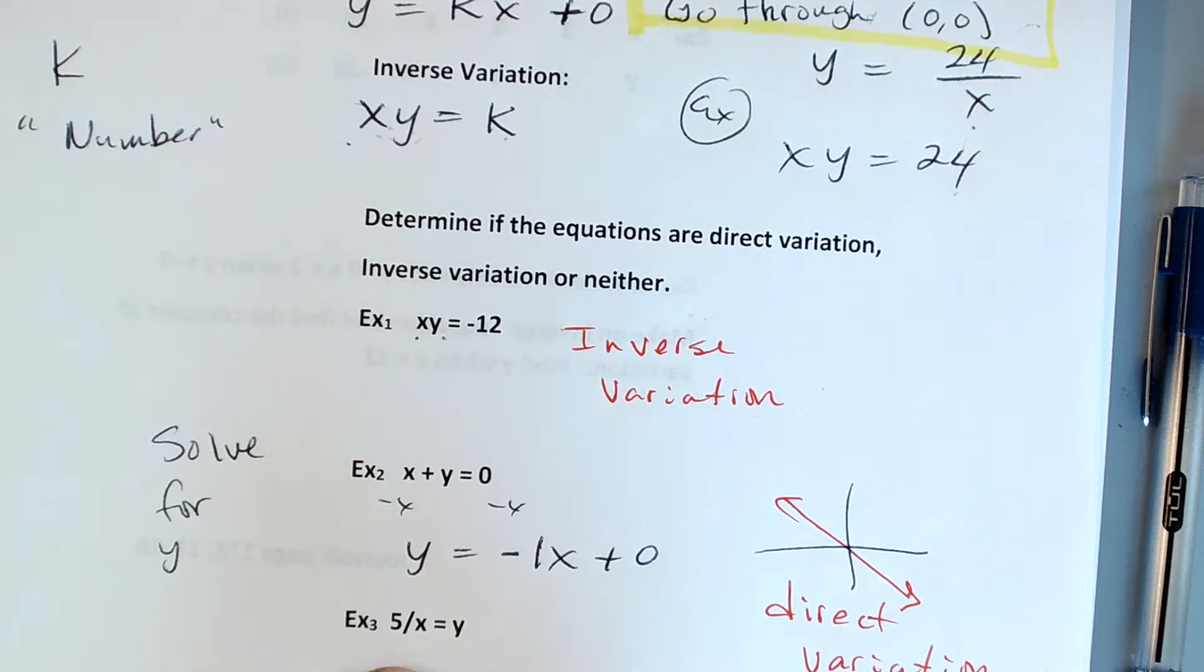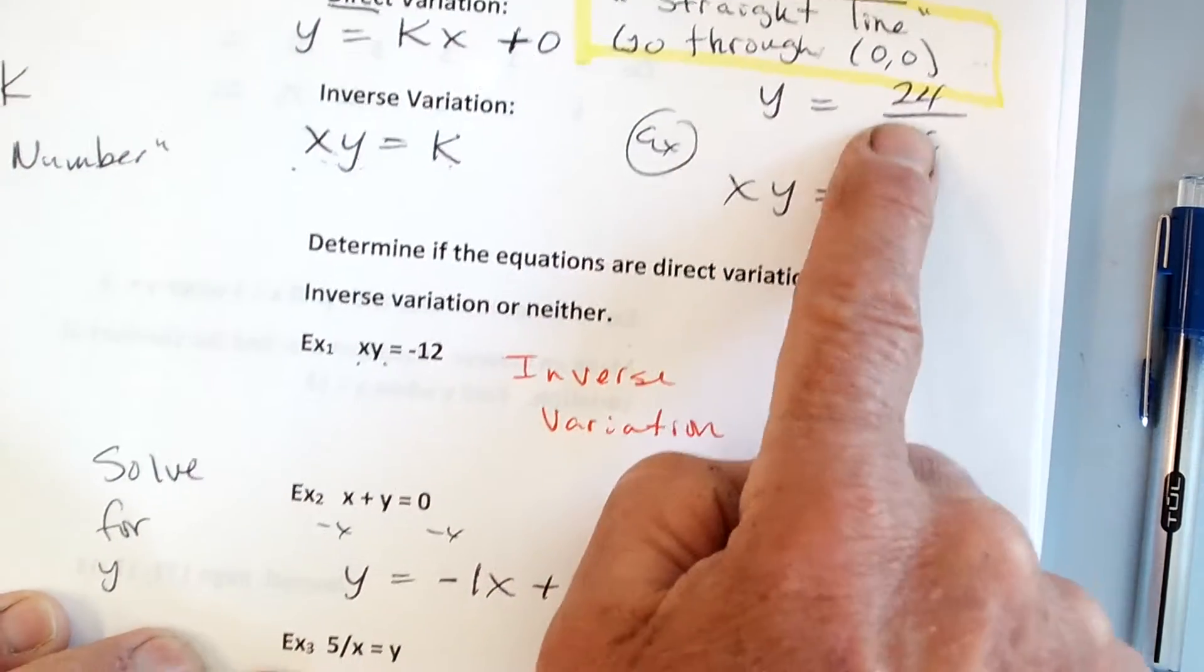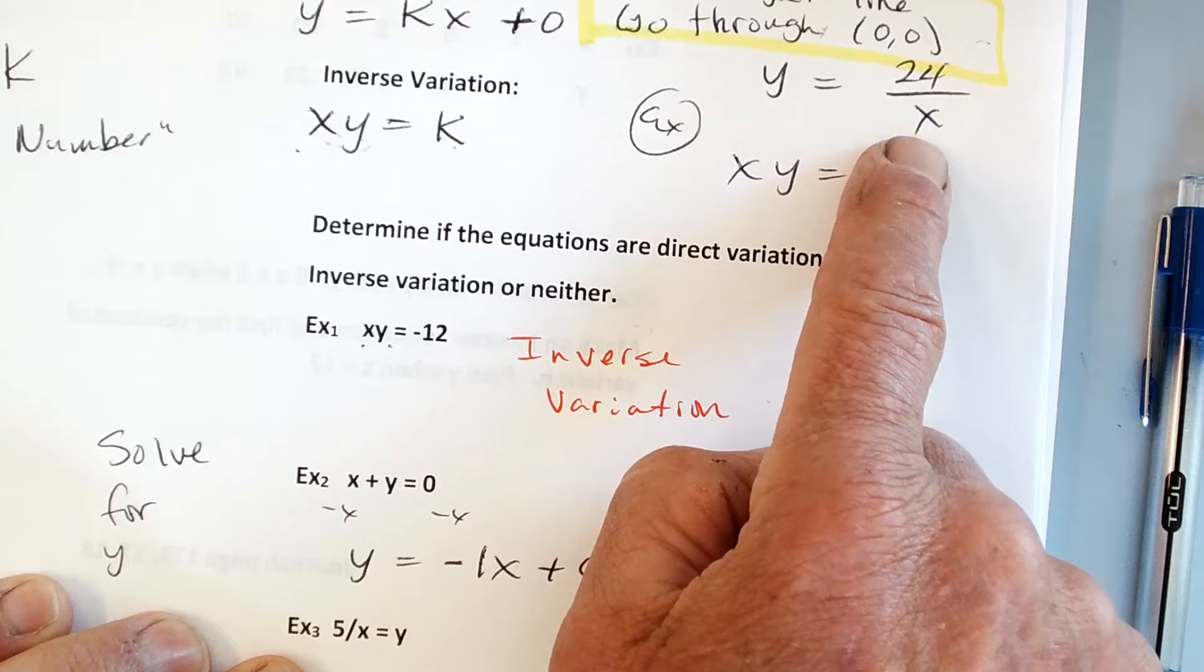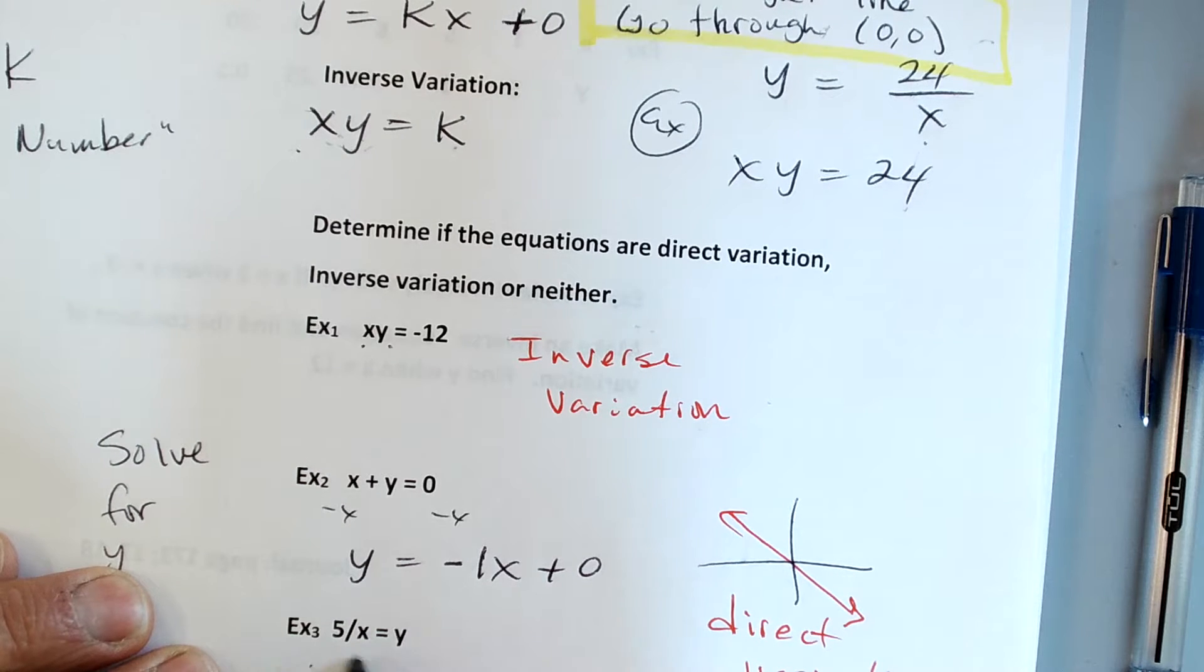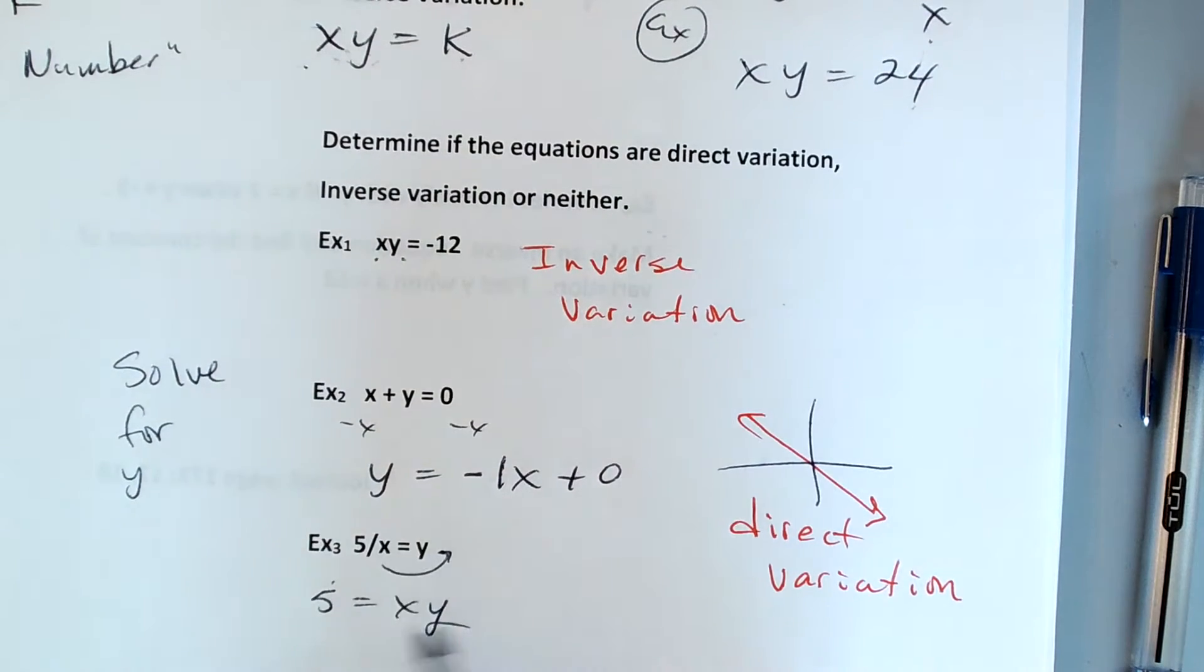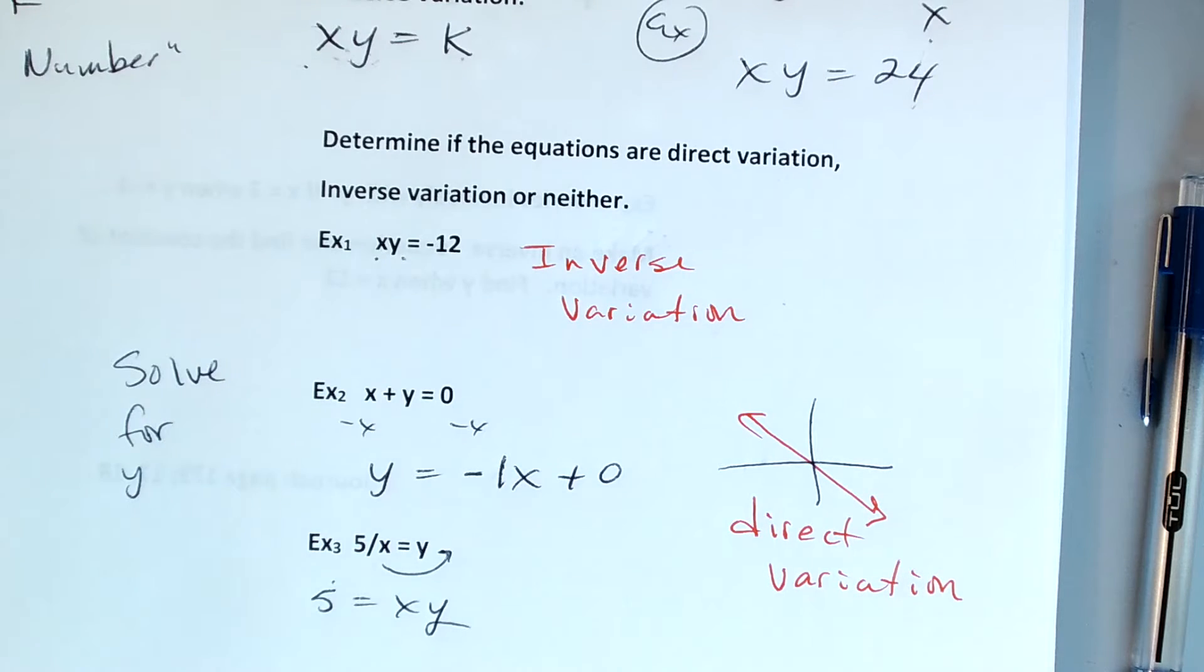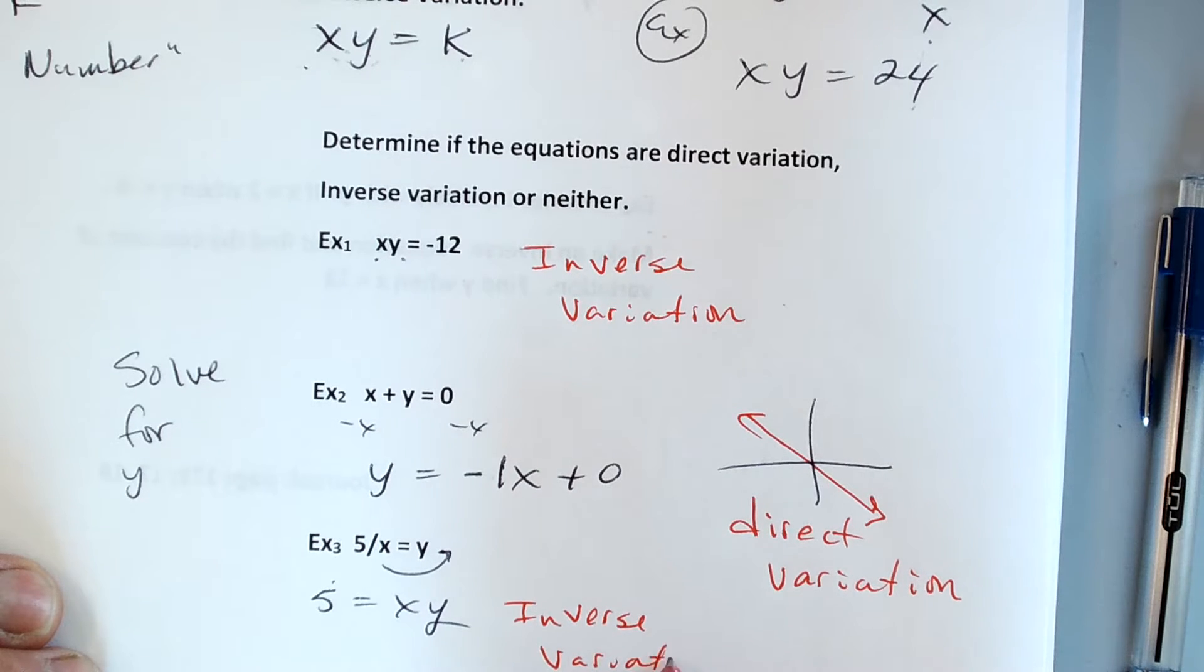This one's a little bit tricky. It looks like, if I solve for it, I've got y equals 5 over x. Another way I can do it is multiply up the x. If I multiply the x, it could be 5 equals xy, which is in the same form as my inverse variation.